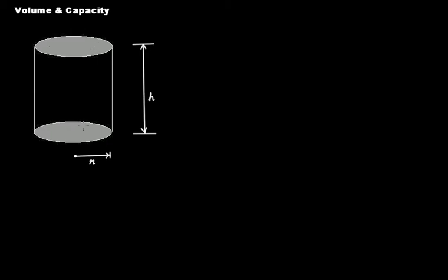That makes this soft drink can a cylindrical shaped can. So if someone asks you what will be its volume, you will say that the radius is r and the height of this can is h. Let's calculate the volume: V = πr²h. Let's say in this case it is 700 ml. So the volume of this can is 700 ml.